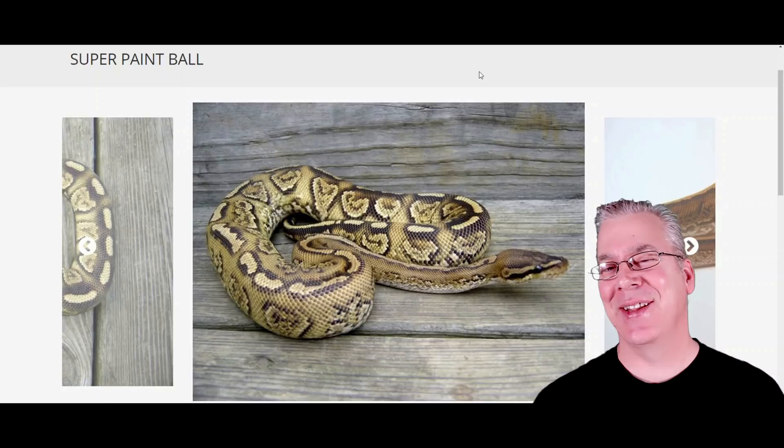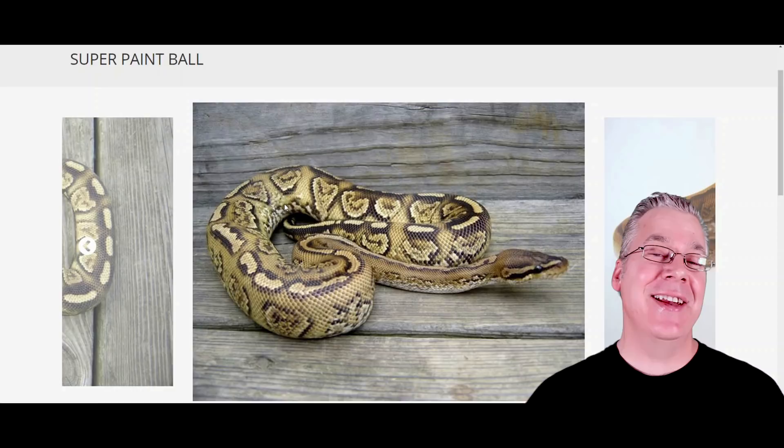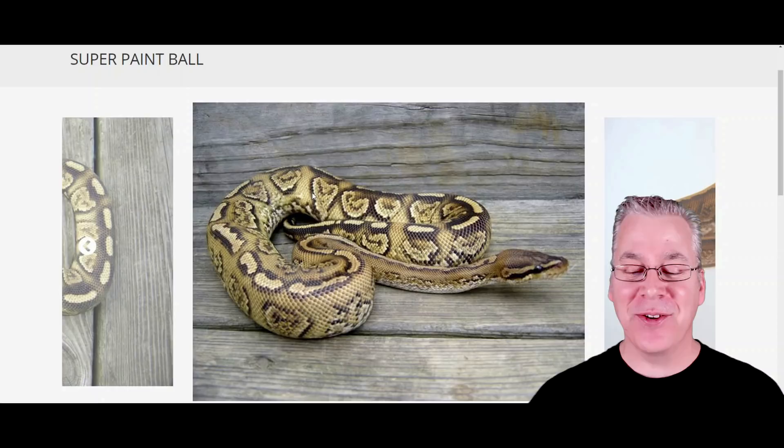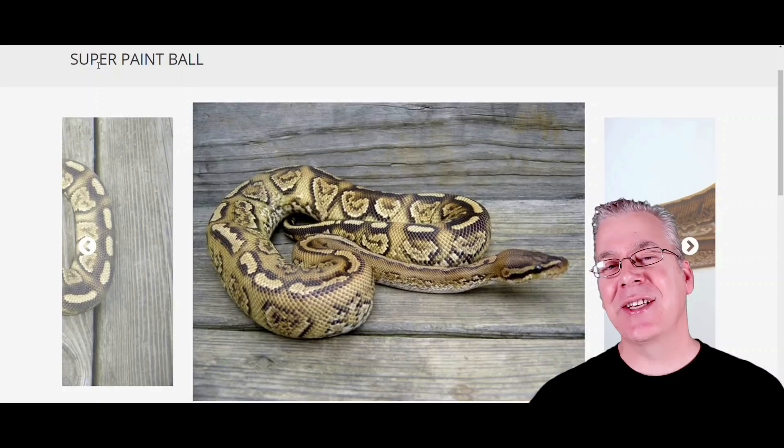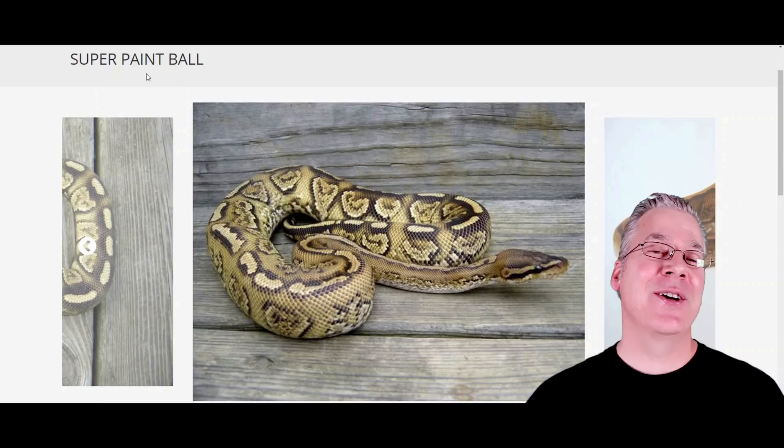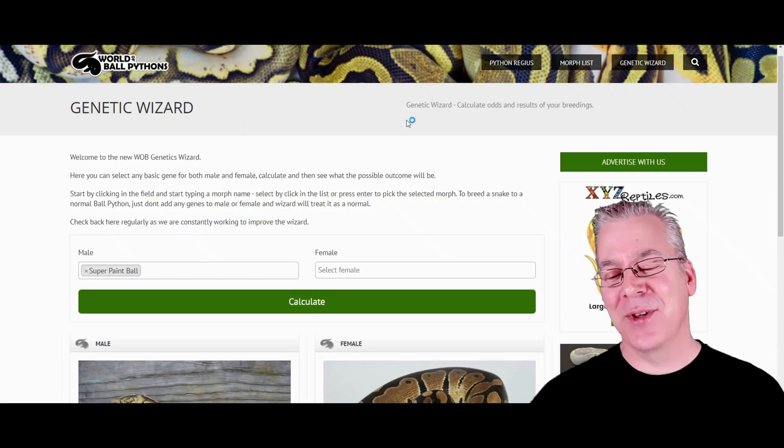This is what the super paint looks like and it's pretty amazing. Just looking at the snake, you can tell it's completely different than any snake I've ever seen. It has a really crazy pattern, almost like a greenish earth-tone pattern. The confusing thing is it's considered a super paint on World of Ball Pythons, but over on MorphMarket they consider it a visual paint — a recessive gene instead of co-dominant.